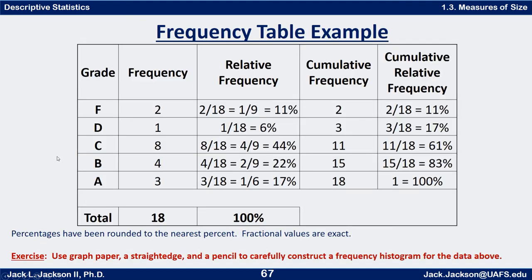This is some grade data from the previous video. I want to make an exercise out of this. Get some graph paper, a straight edge, and a pencil, and carefully construct a frequency histogram for the data above. A histogram is just a bar graph where the output is a frequency. This is ordinal data, so put the bars in the correct order. Go ahead and do this now — press pause.